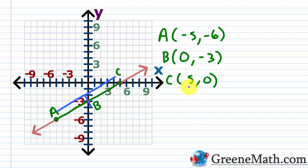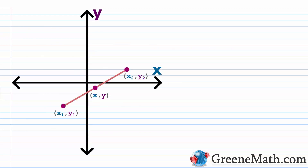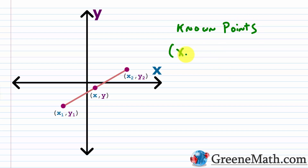So how can we find these coordinates in general — the coordinates of the midpoint? Let's go down and derive our formula. Suppose we have two known points. This is usually the scenario: you're trying to find the midpoint and you know two of the points. Let's call them X sub one, Y sub one, and X sub two, Y sub two. These points are known.